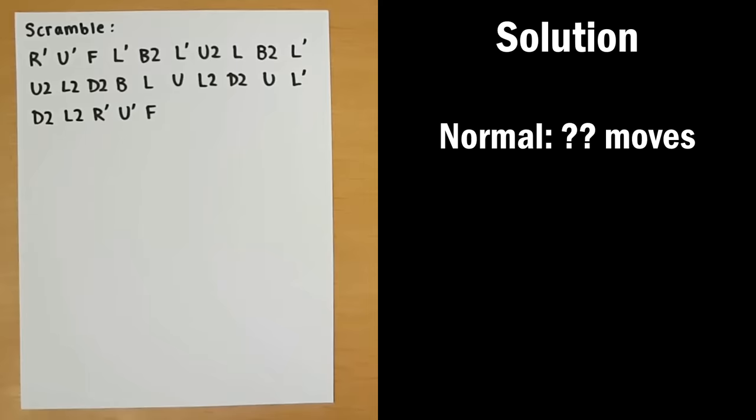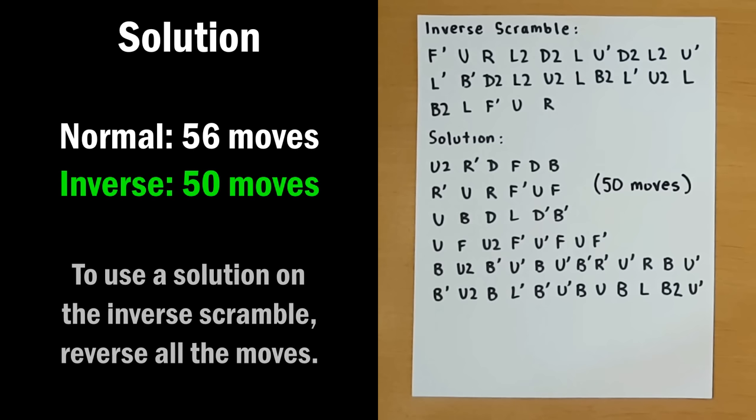So we have this scramble. Let's say you could solve it in 56 moves at best. You can also try solving on the inverse of the scramble. And for example, if you did that in 50 moves, you can just use that as your solution instead, as long as you also reverse your solution.